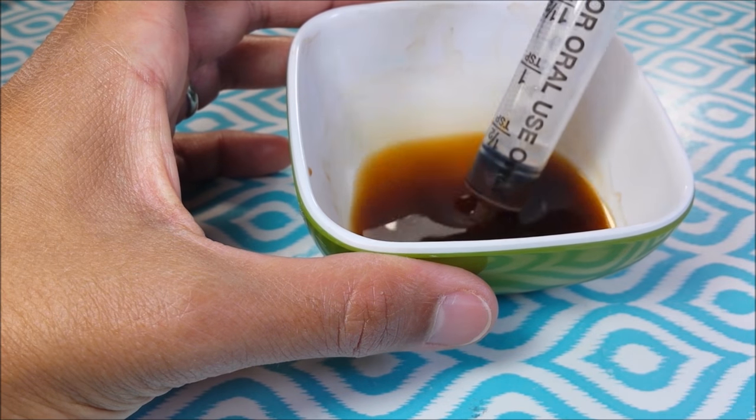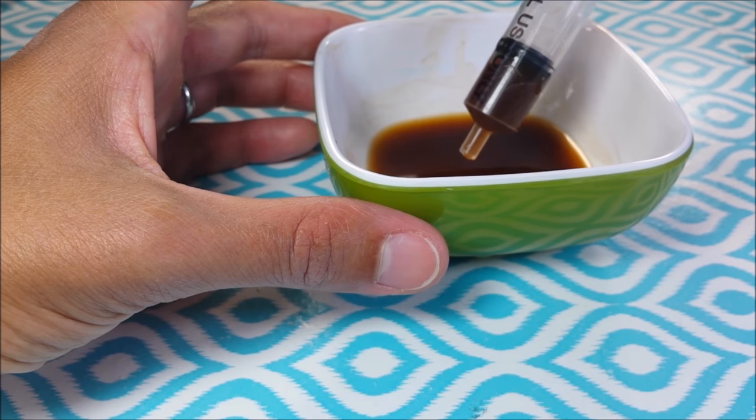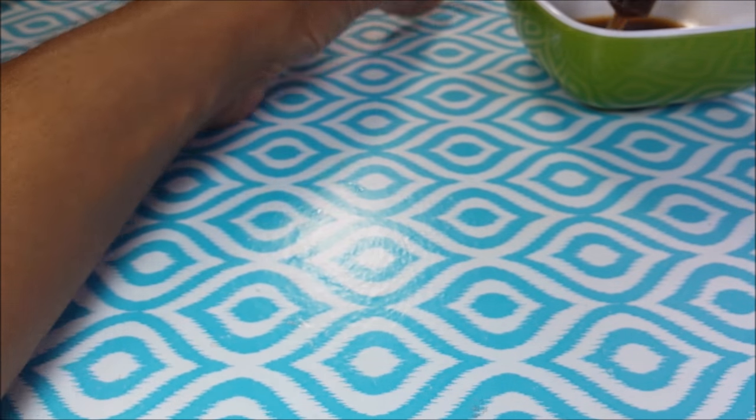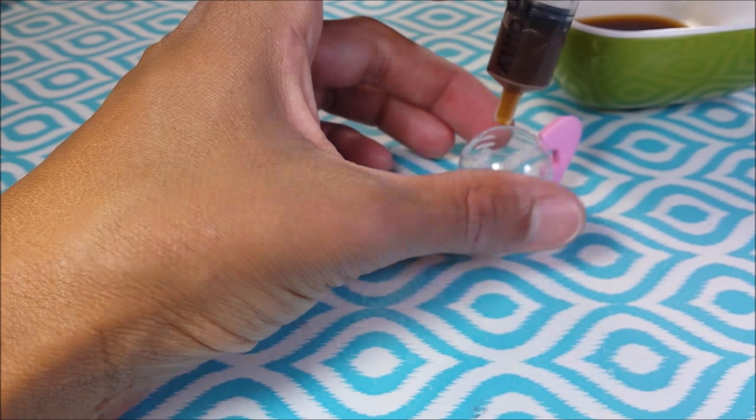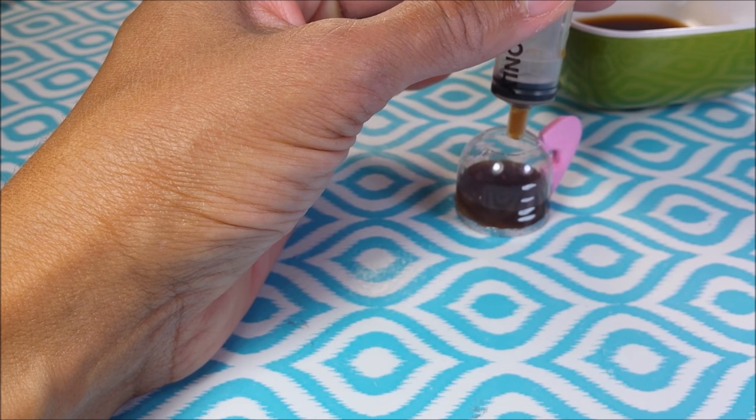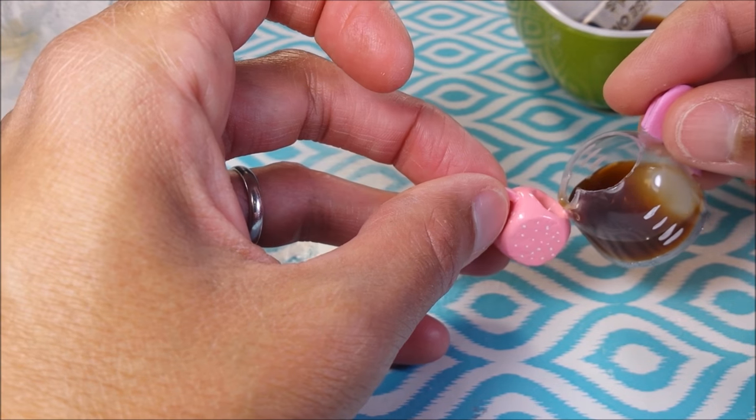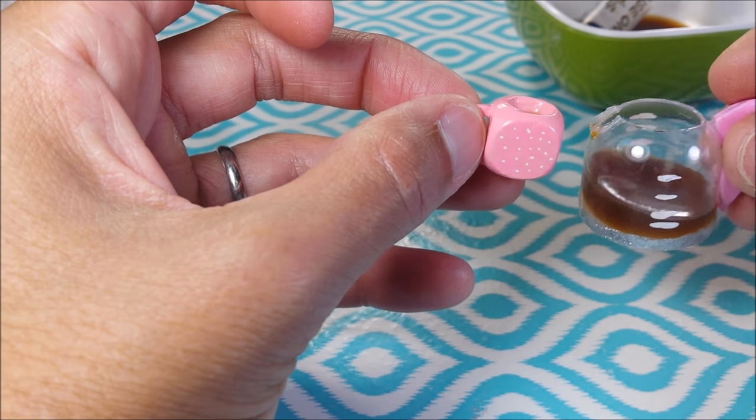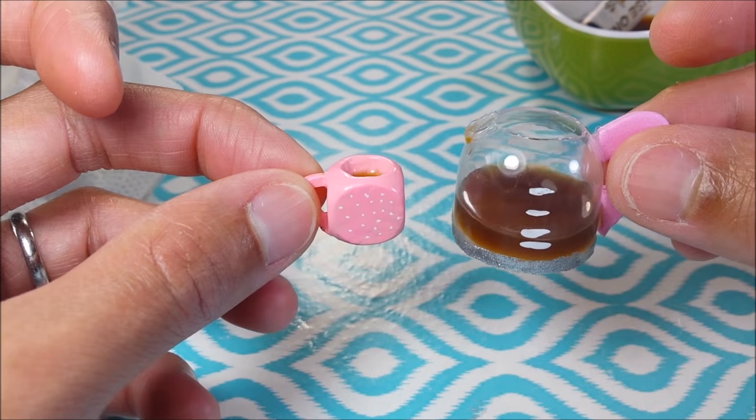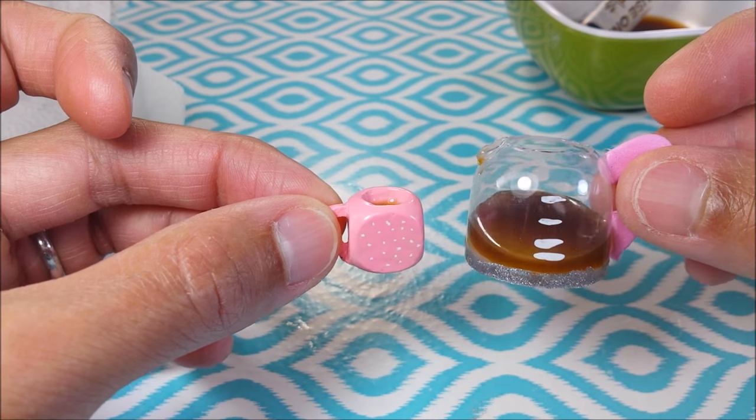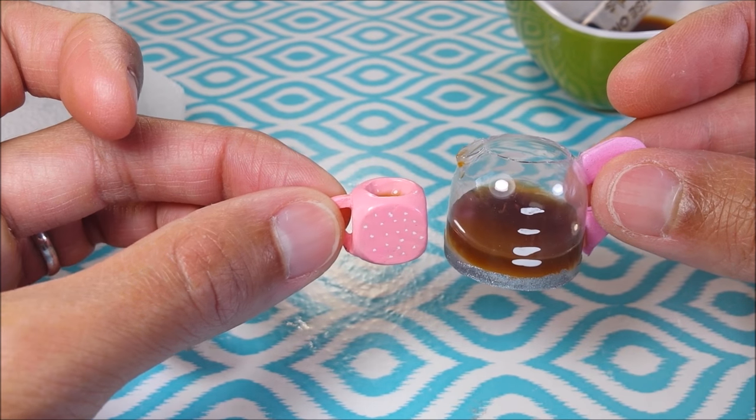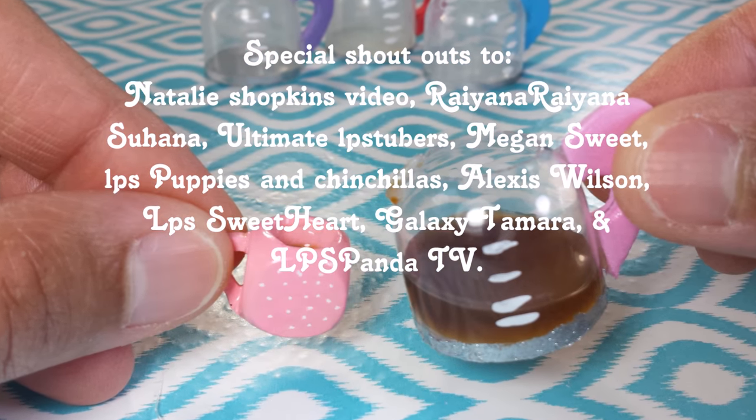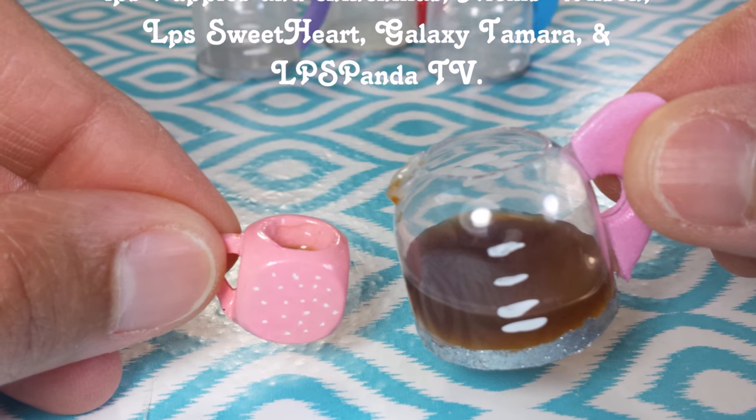So here I've mixed some instant coffee and warm water. Alternatively, you can just use water and blue, red, and green food coloring until you get a blackish color. Squirt inside my coffee pot, and guys, you are so totally good to go.